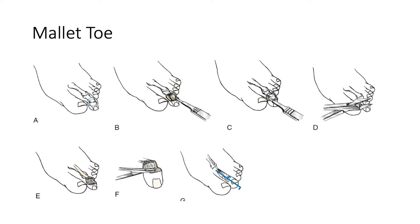For a mallet toe, the deformity is at the DIPJ, so the PIPJ can essentially be ignored and you do the same resection at the DIPJ. If you have a stiff contracture of a claw toe involving both joints, it would be totally reasonable to perform this at both the DIPJ and PIPJ.